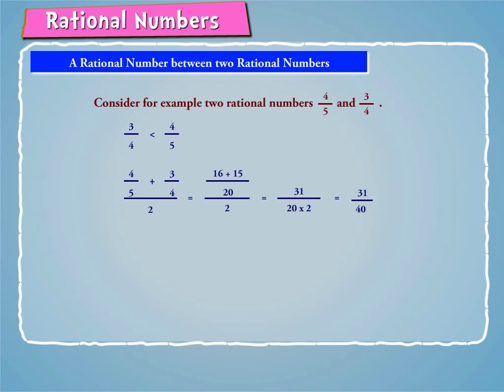Similarly, we can find another rational number between 31 by 40 and 3 by 4.